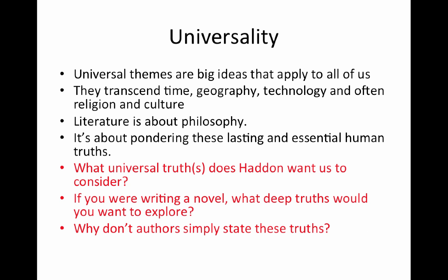One of the most important things in a theme is the concept of universality. Universal themes are big ideas that apply to all of us — ideas that everybody feels or thinks about, which makes them universal. They transcend time, geography, technology, and usually even transcend different religions and cultures. For example, falling in love is a concept we might think of as universal — it was happening a hundred years ago, a thousand years ago, and we'd expect it two thousand years from now, across all cultures and religions. Essentially, literature is about having us philosophize about those big universal concepts. It's philosophy, but in a less lecture-y kind of way — pondering these lasting and essential human truths. And that's really what distinguishes literature from simply fiction.